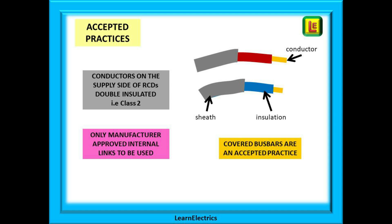Conductors on the supply side of the consumer unit must be double insulated — in other words, making them Class II and giving them two layers of protection. You can see from the picture that the copper conductor is surrounded by first a layer of plastic insulation, and then this is encased in a second layer of plastic sheathing. This is exactly the arrangement that we have with meter tails. Also, only manufacturer's approved links should be used inside the consumer unit, as the manufacturer has designed the internal links to satisfy the safety requirements for their consumer unit. Copper bus bars supplied by the manufacturer and protected by a plastic guard are also acceptable, and using a torque wrench to secure screws to the manufacturer's recommendations is also a requirement.